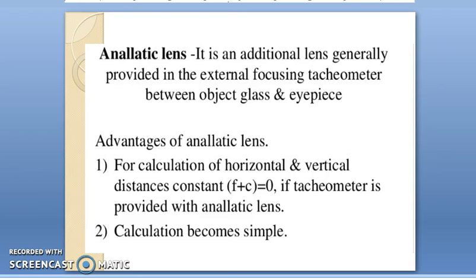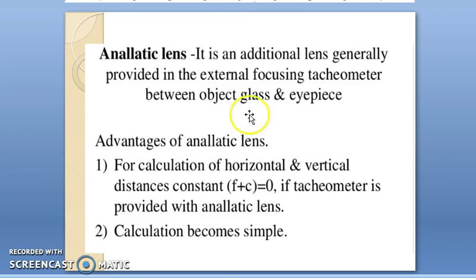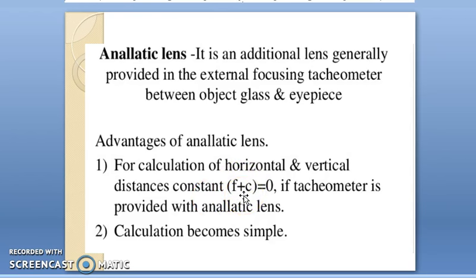We need to understand what an analytic lens is. An analytic lens is a lens which is additionally fixed and it is usually provided in an external focusing tachymeter between the object glass and eyepiece. The advantage of using this lens is that calculation becomes very simple, because the additive constant f plus c will become equal to zero.